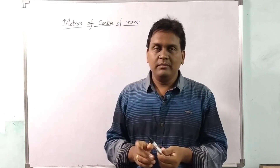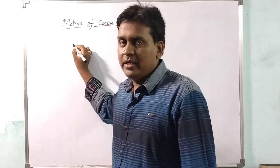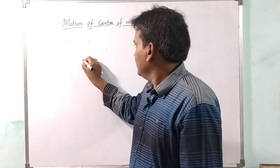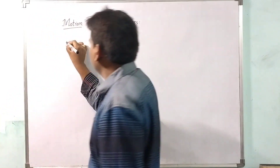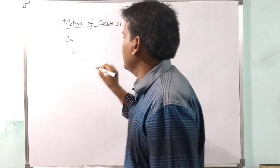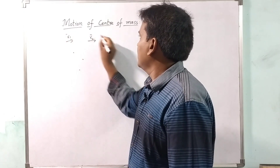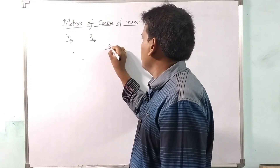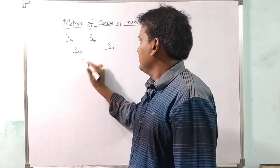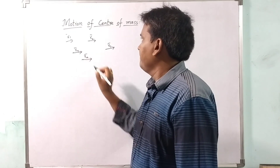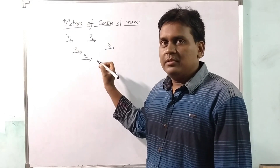Here we are going to discuss about the motion of center of mass for a system of particles. Consider some particles: r1 is the position of particle 1, r2 is the position of particle 2, r3 is the position of particle 3, r4 is the position of particle 4, and so on up to rn for n number of particles. This gives the position of the center of mass of those particles.